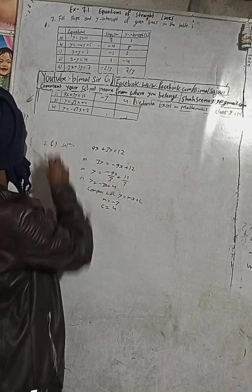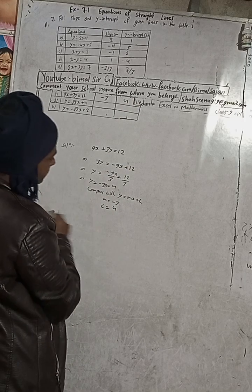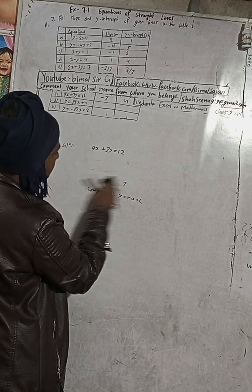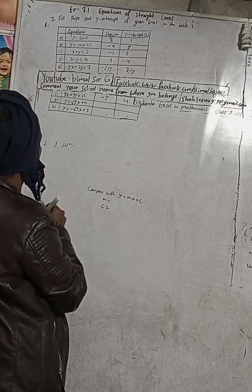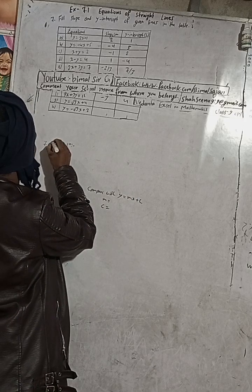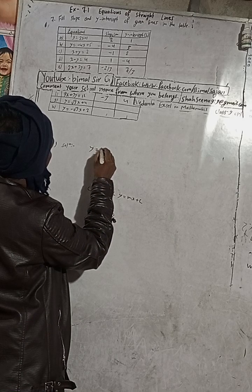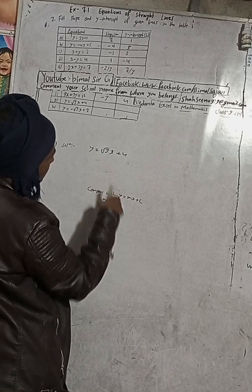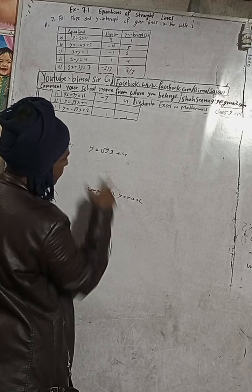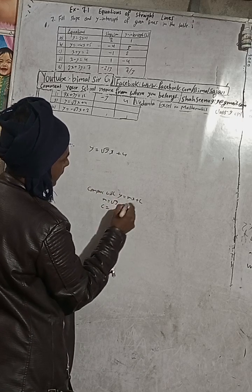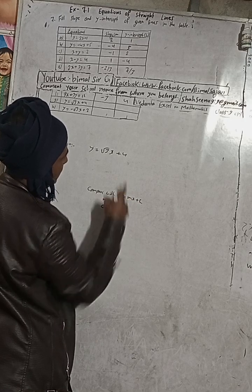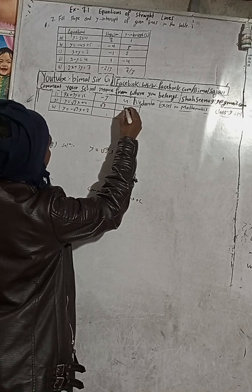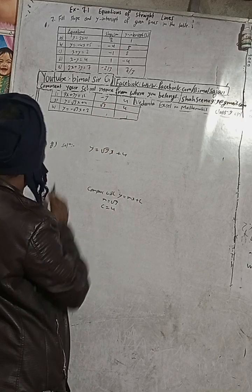Part (g): y = √3 x + 4. Directly comparing with y = mx + c, in place of m there is √3, so slope m = √3, and c = 4.